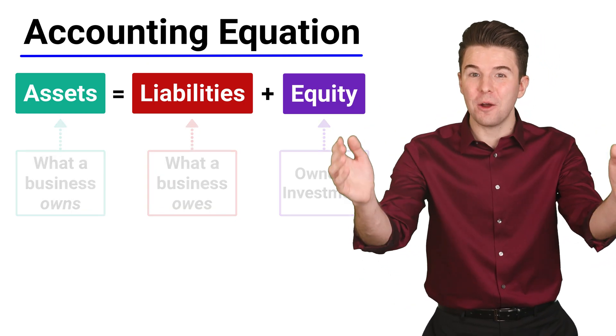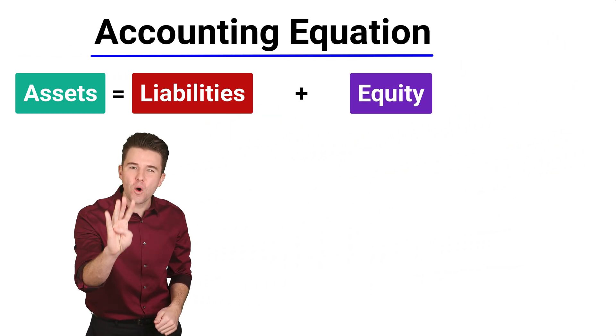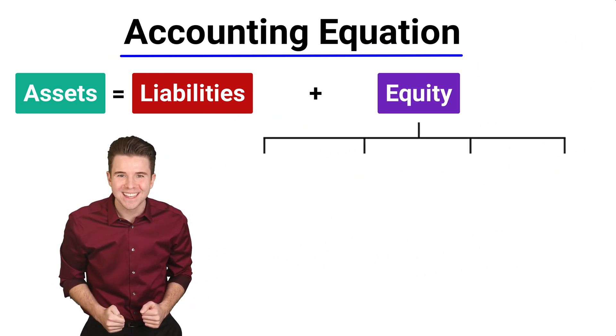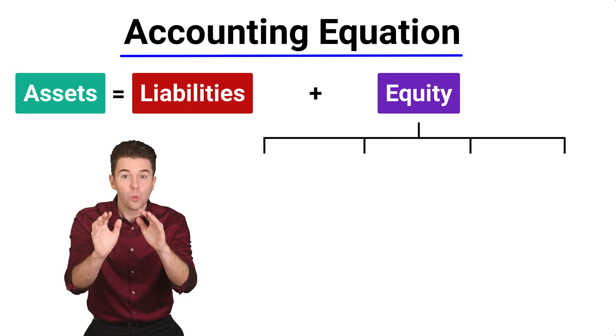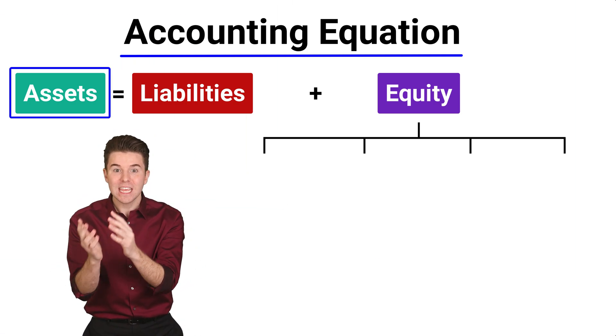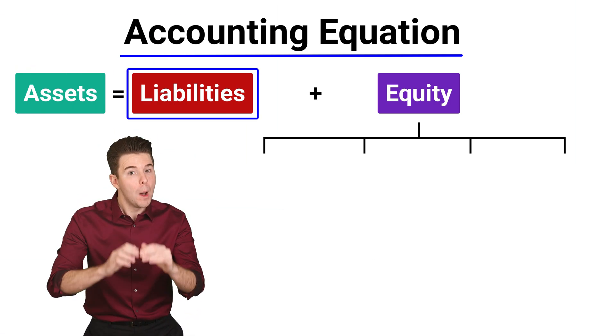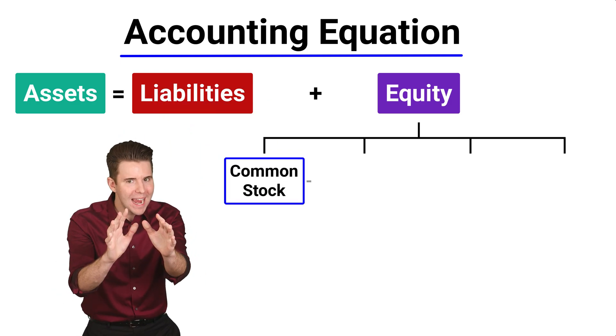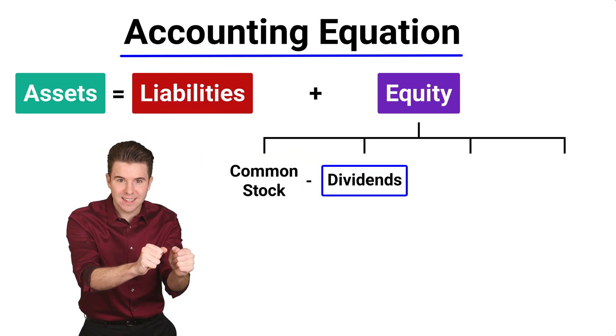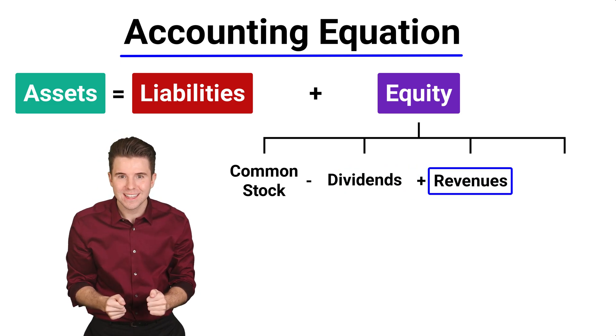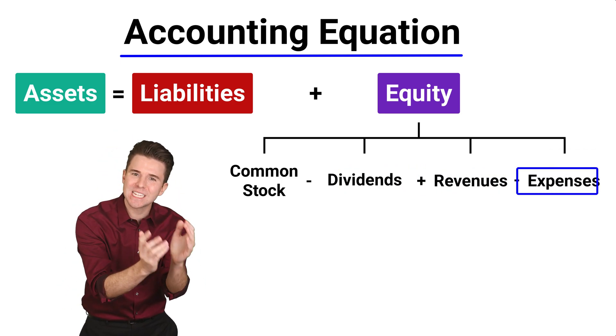Now we can expand the accounting equation to show the four parts of equity. When we do this, we get assets equals liabilities plus common stock minus dividends plus revenues and minus expenses.